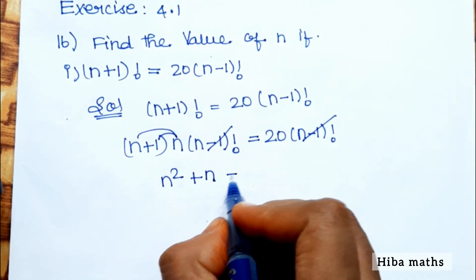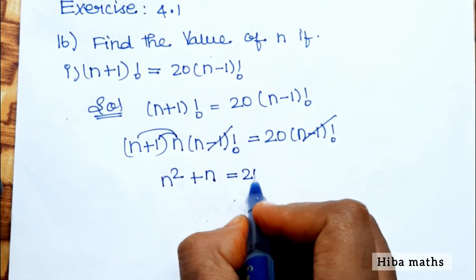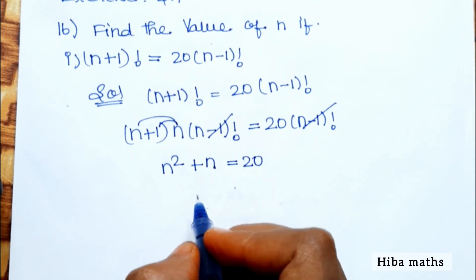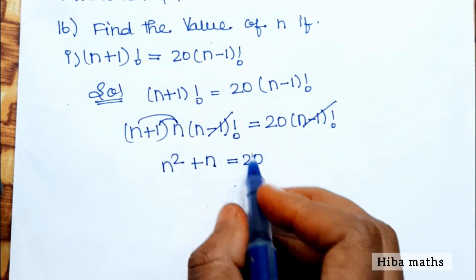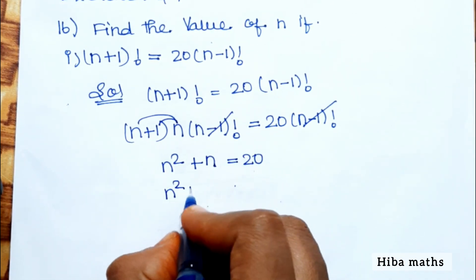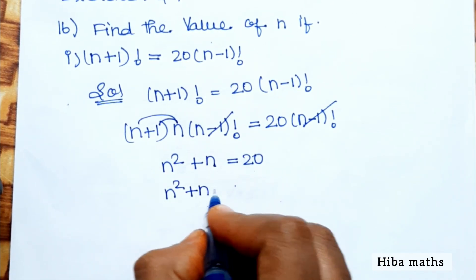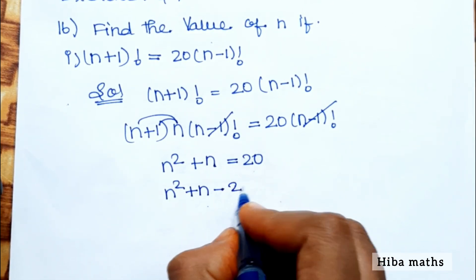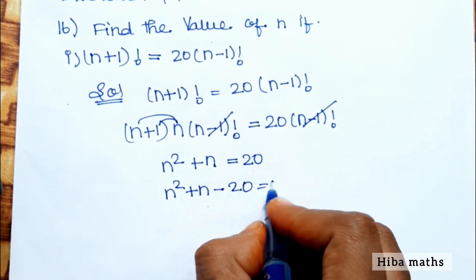Multiplying out, n into n gives n², and n into 1 gives n, so the left-hand side equals n² plus n. This means n² plus n minus 20 equals 0.